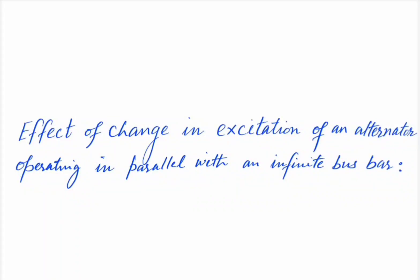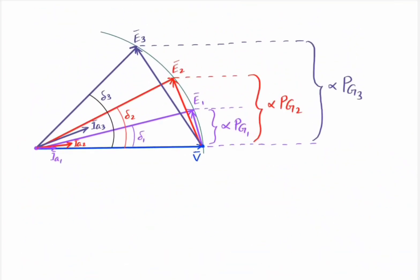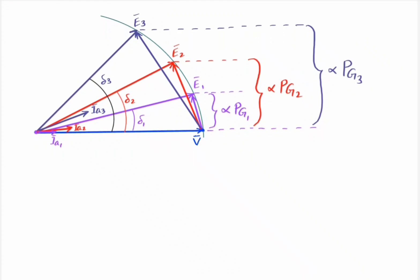Dear students, in this lecture we are going to discuss the effect of change in excitation of an alternator operating in parallel with an infinite bus bar. In the previous lecture, we discussed the effect of change in mechanical input, where we observed that by increasing mechanical input, active power output increases — that is, Pg increases — and at the same time delta also increases.